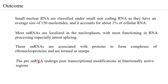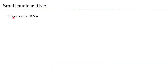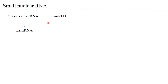The pre-small nuclear RNA undergoes post-transcriptional modifications, and those modifications are generally at functionally active regions of the small nuclear RNA. There are two classes of small nuclear RNA: one is called the Sm small nuclear RNA and the other is called the LSM RNA. The Sm or LSM here refers to nuclear proteins that are present.